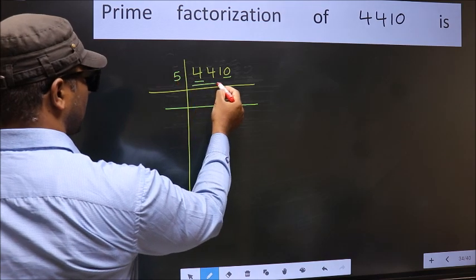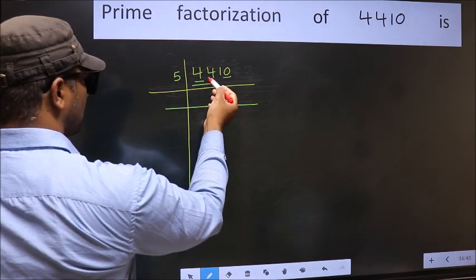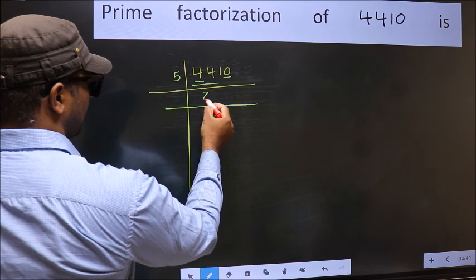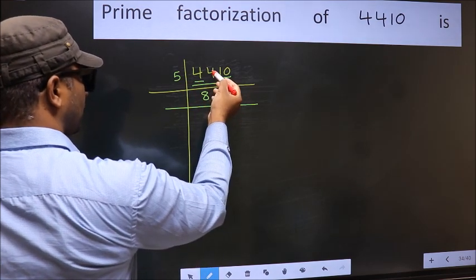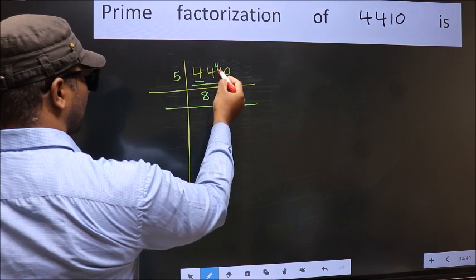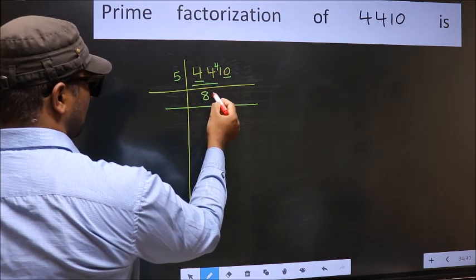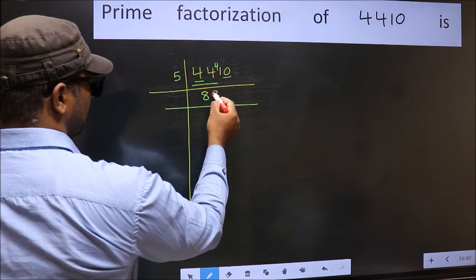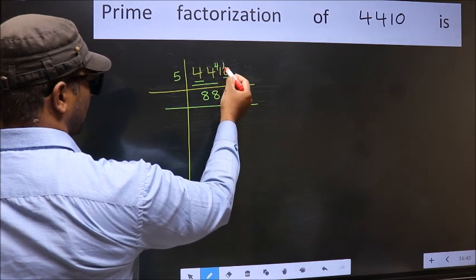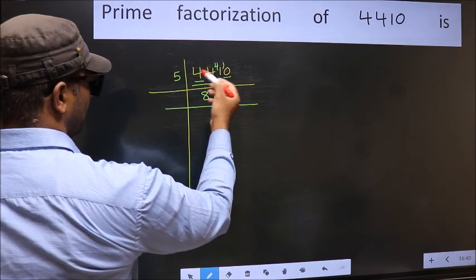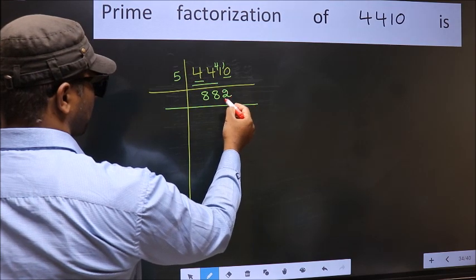The first number is 4, which is smaller than 5, so take two numbers: 44. A number close to 44 in the 5 times table is 5×8=40. 44 minus 40 is 4, carried forward: 41. A number close to 41 in the 5 table is 40. 41 minus 40 is 1, carried forward: 10. We get 10 in the 5 table as 5×2=10.